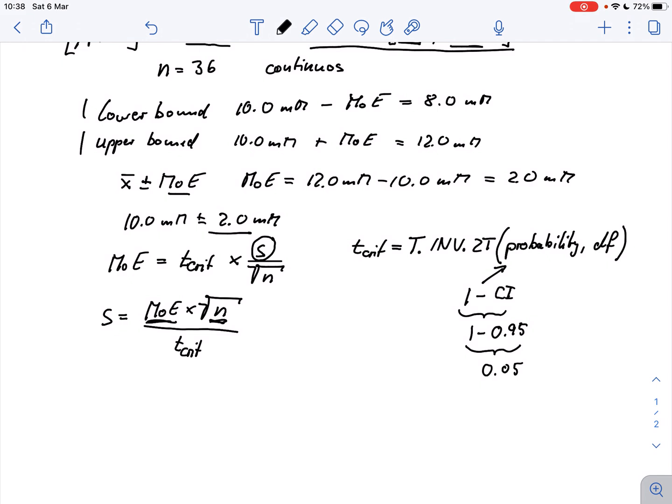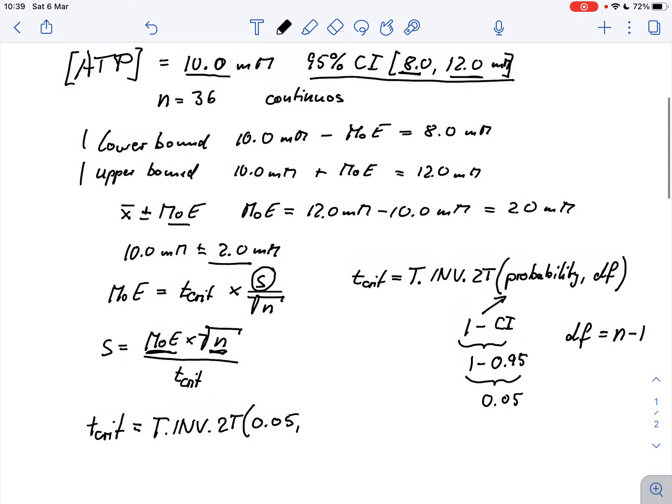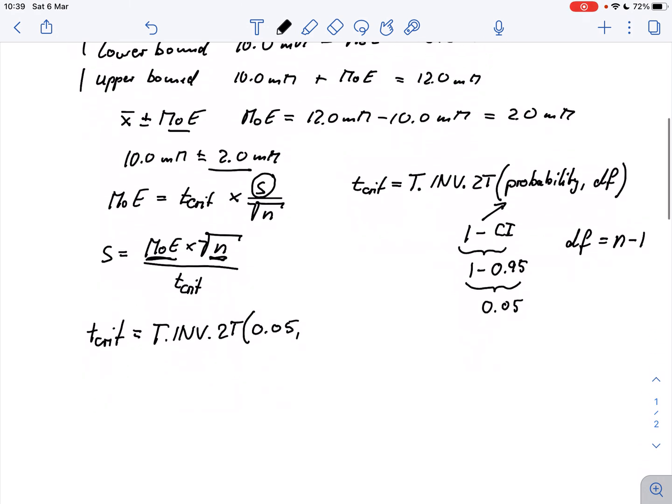And the degrees of freedom are given by the sample size minus 1 in this case. So we can calculate t crit, the critical t value. That would be t dot inv dot 2t of 0.05, and we had a sample size of 36, so the degrees of freedom are 35, so we would put that into Excel.